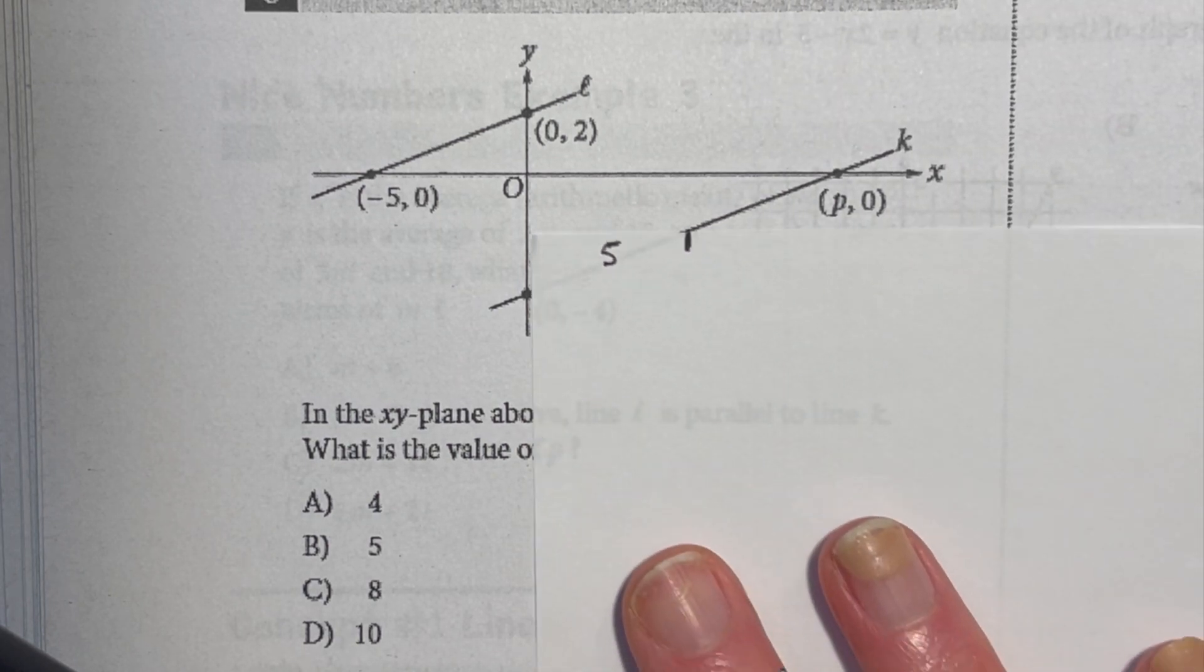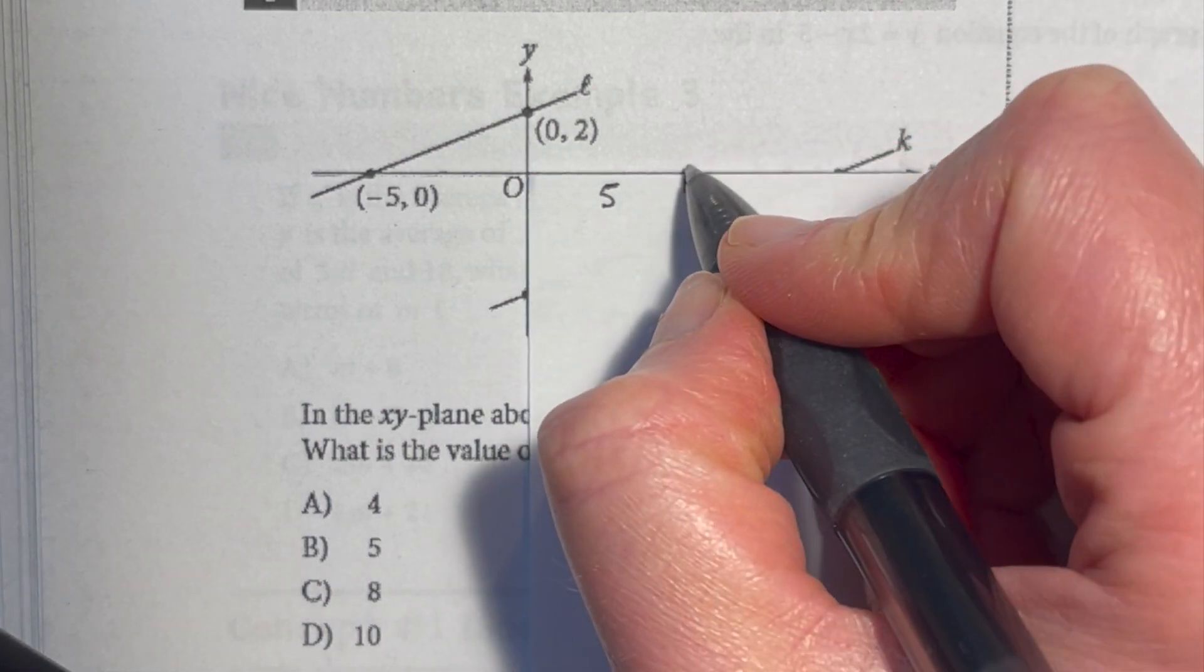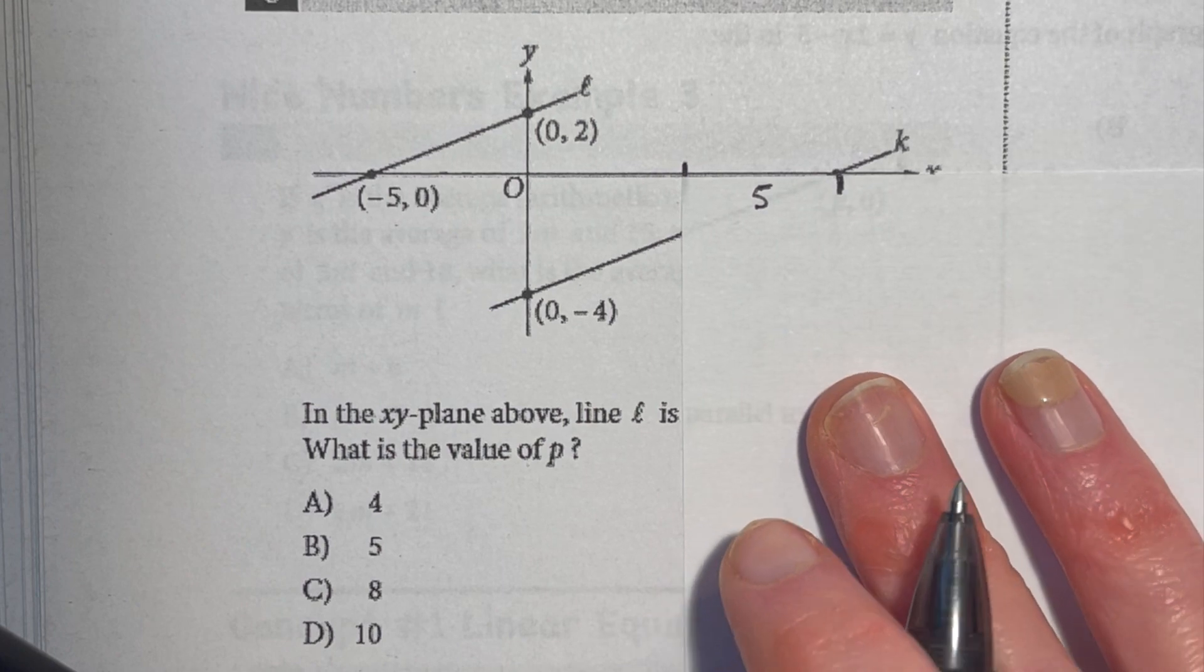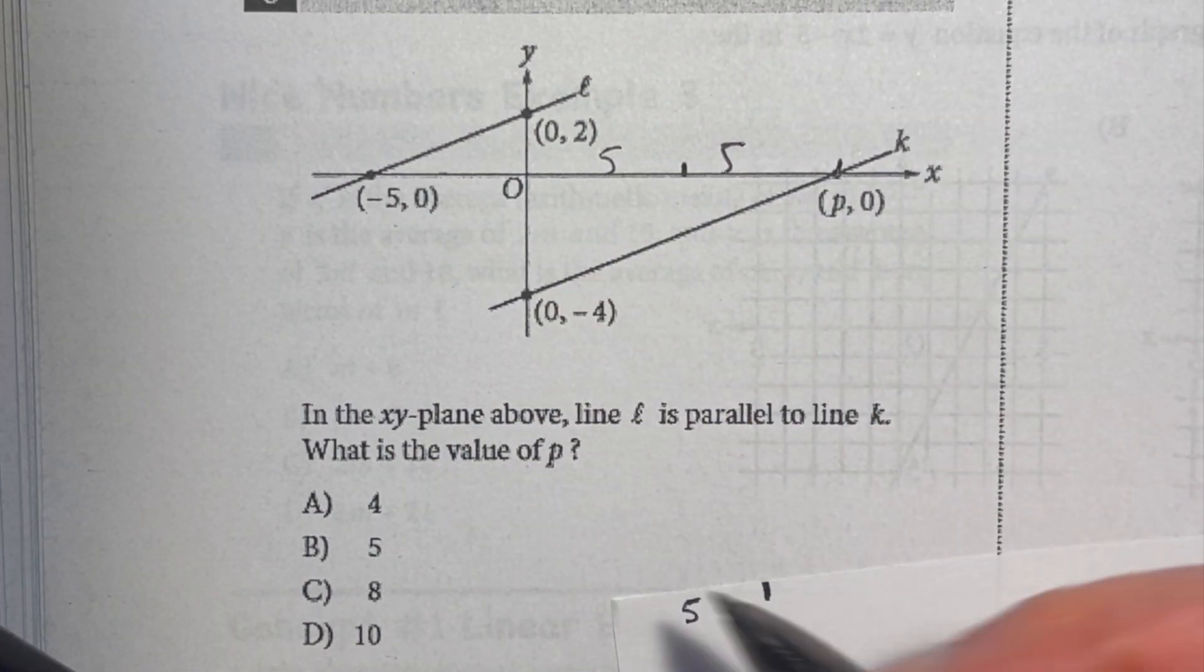I can just see how many times that five units fits, and as you can see on this problem, it fits exactly twice. So that means p is 10 away.